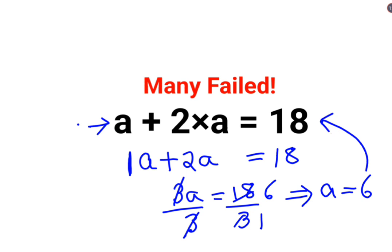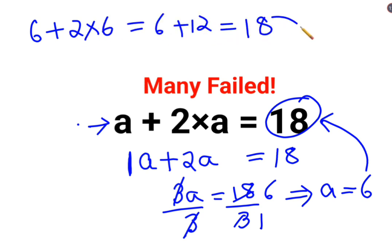Let's put it over here and see if we are getting the answer as 18. So we have 6 plus 2 into 6, which gets you 6 plus 12, which gets you 18. So that is the RHS. Therefore, I can say the value of A equals 6 is absolutely correct for this particular question.